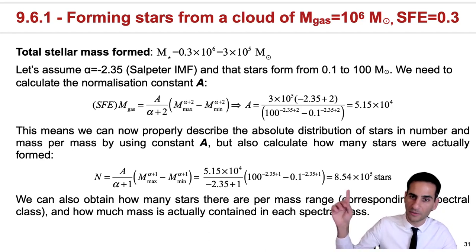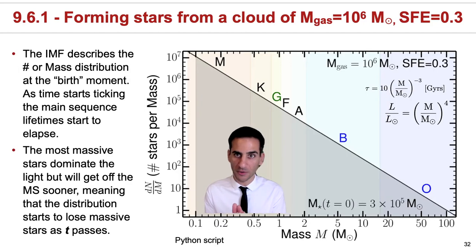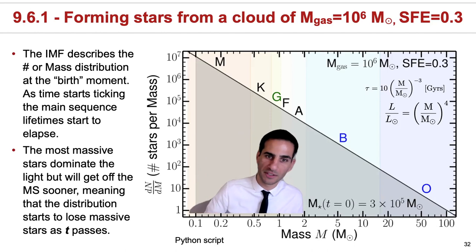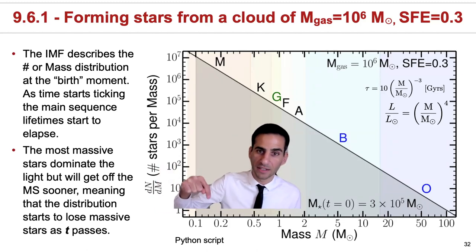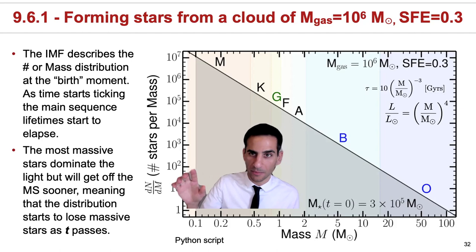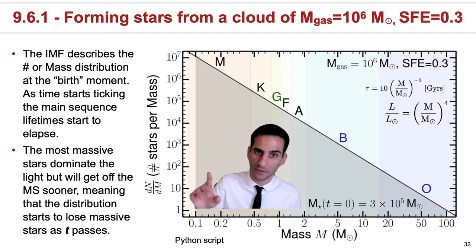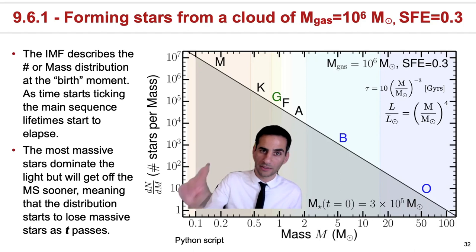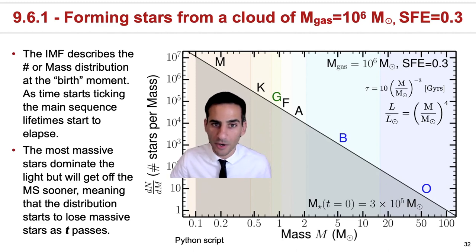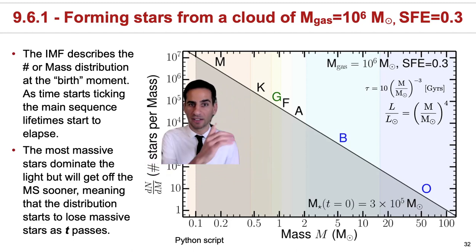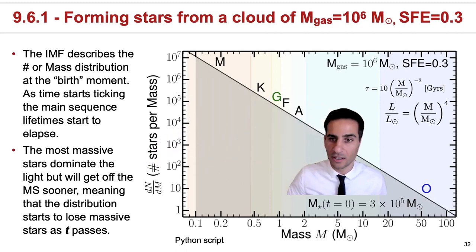Let's visualize what the IMF is really telling you. In this plot you can see it clearly: I've plotted dN/dM in log scale versus mass in solar masses, also in log scale. We plot the expression A times M^α with α = -2.35, and we calculated what A is, so we can really plot this. At the moment of formation, this is how the relative number of stars per mass looks like. We also know how to associate mass with spectral class, so this tells us there will be a lot of M-class stars, less K, less G, and only a few O-type stars.